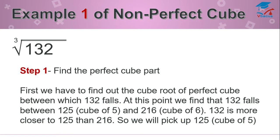First, we have to find out the cube root of perfect cube between which 132 falls. At this point, we find that 132 falls between 125, that is cube of 5, and 216, that is cube of 6. 132 is more closer to 125 than 216. So we will pick up 125, that is cube of 5.